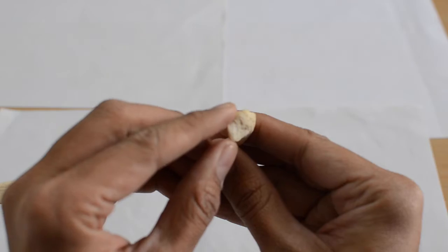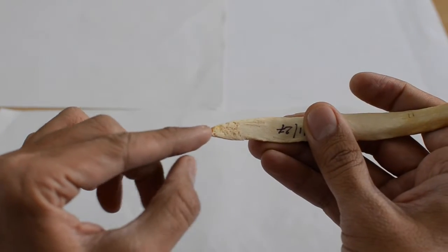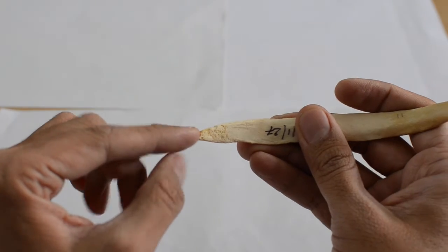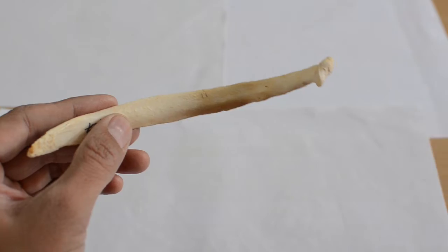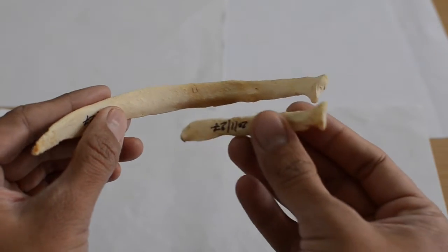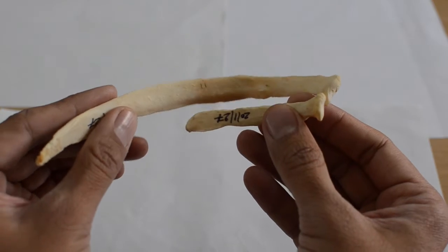The tip is providing attachment to the 11th coastal cartilage, so it is more or less similar to that of the 12th rib. But when you compare it with the 12th rib, you can clearly make out the difference in length. The 12th rib is much shorter than the 11th rib.